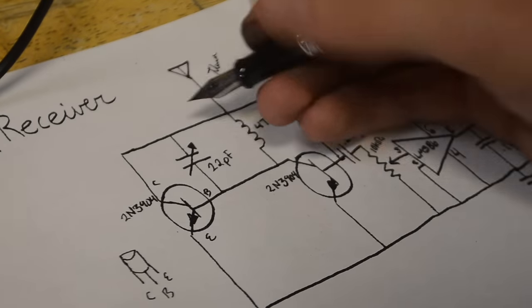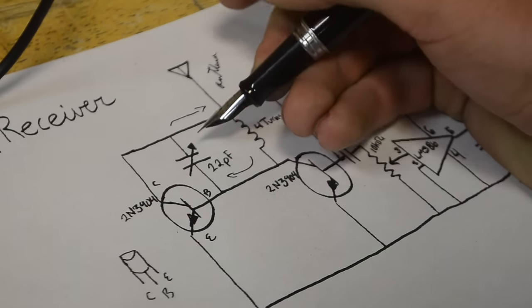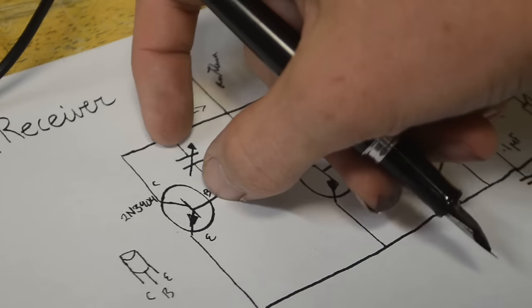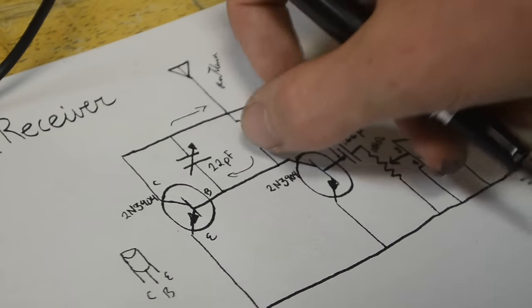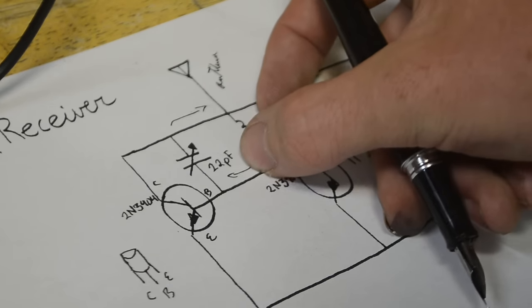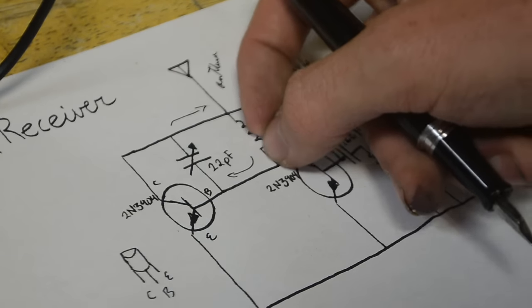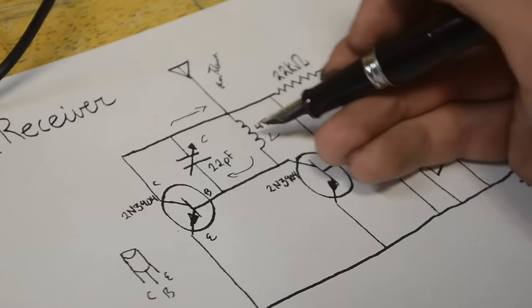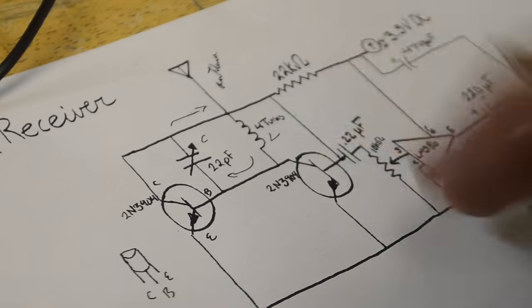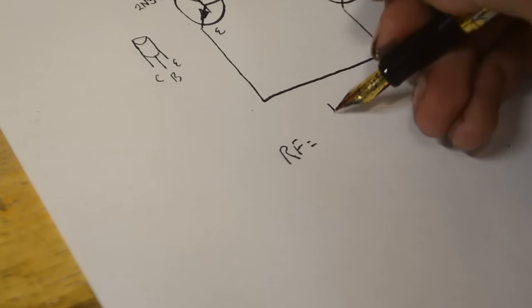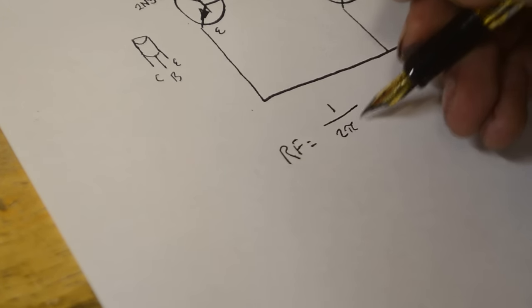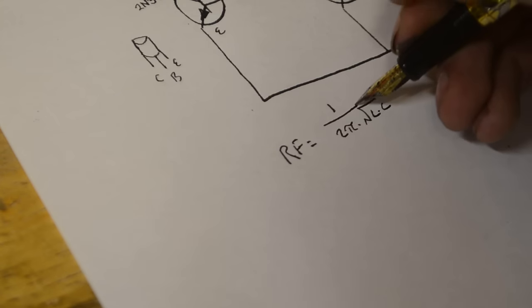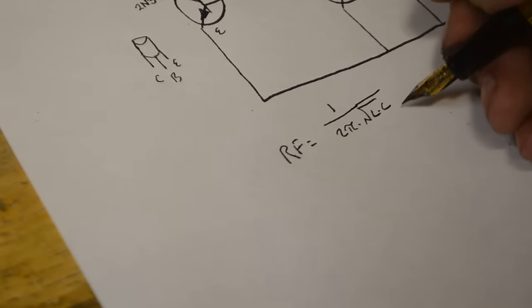The frequency that we're tuned to is due to an oscillation between these two parts here. Basically what will happen is that the capacitor will build up a charge, then dump its charge into this coil. This coil will build up a magnetic field, and then when it collapses back in, it'll dump that charge back into the capacitor. By the inductance here and the capacitance here, we can determine the frequency that it's resonating at. In fact, the resonant frequency is going to be equal to 1 over 2π times the square root of the inductance times the capacitance.